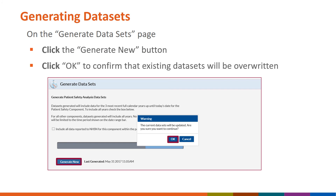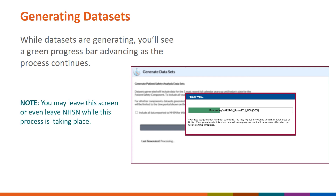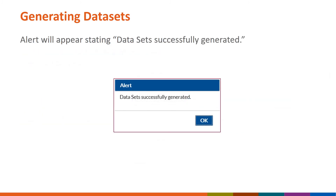Click OK to confirm that existing data sets will be overwritten. To include all data prior to the three most recent calendar years, select the checkbox on the screen. Dataset generation can take a few minutes to complete. While data sets are generating, you'll see a green progress bar advancing as the process continues. You may leave this screen to work in other sections of the application or log out of NHSN during data set generation. Once the data set generation process is complete, you will receive an alert in NHSN stating data sets successfully generated. Please click OK to clear the message.